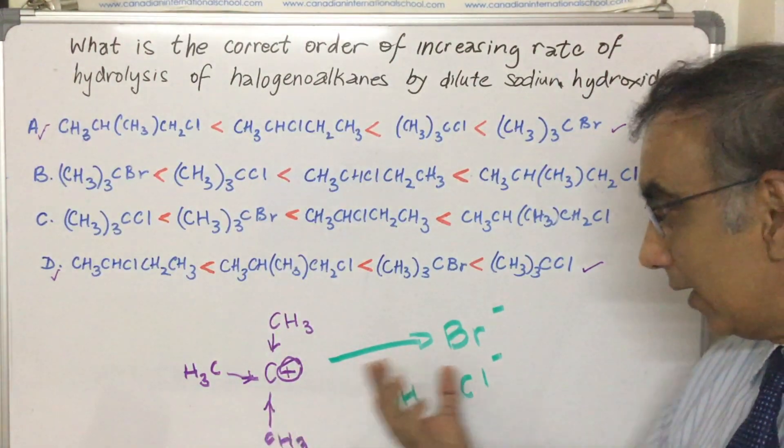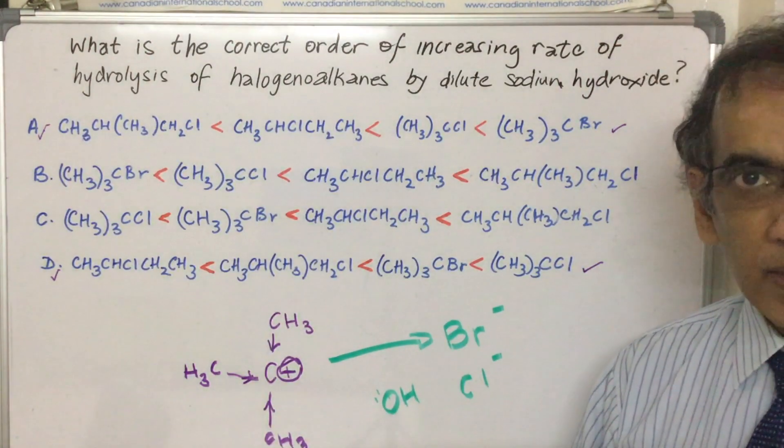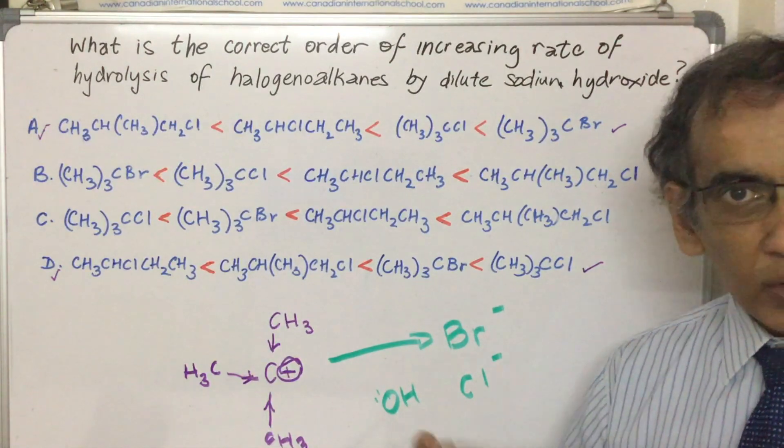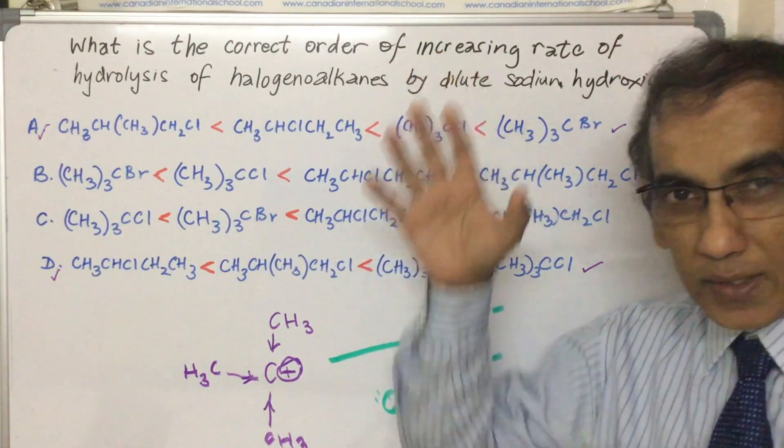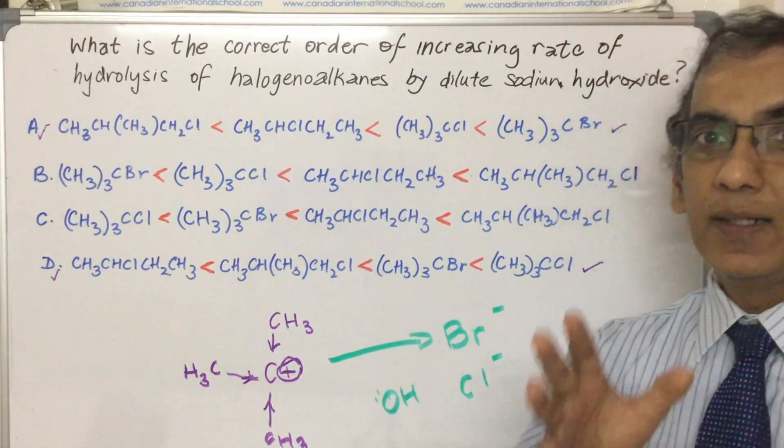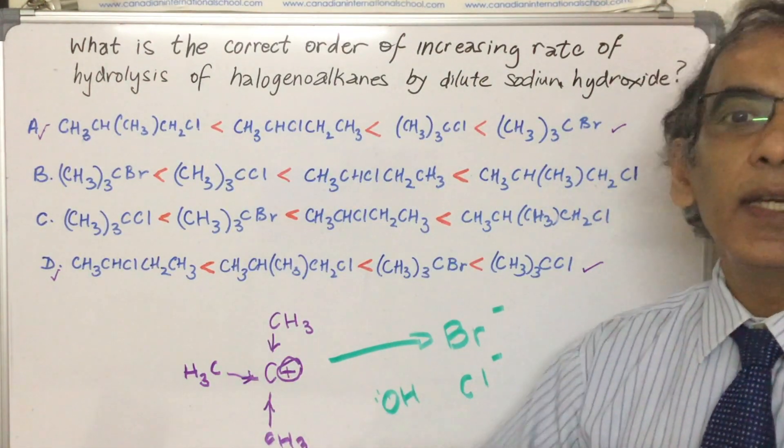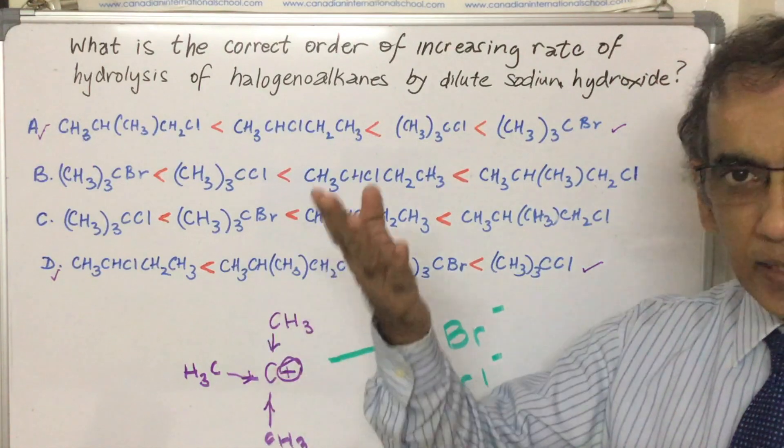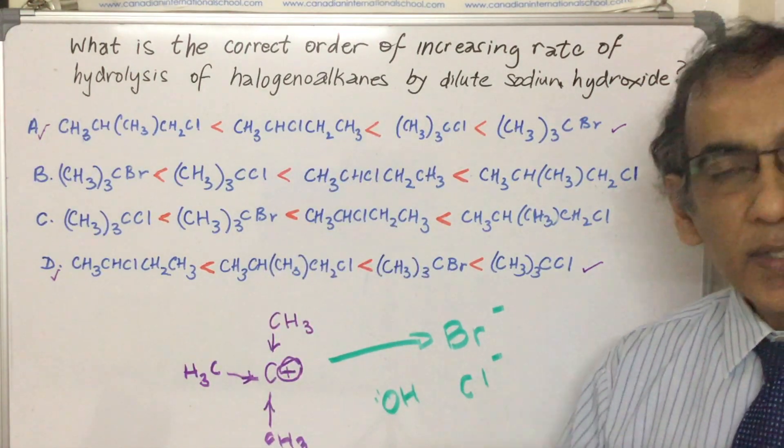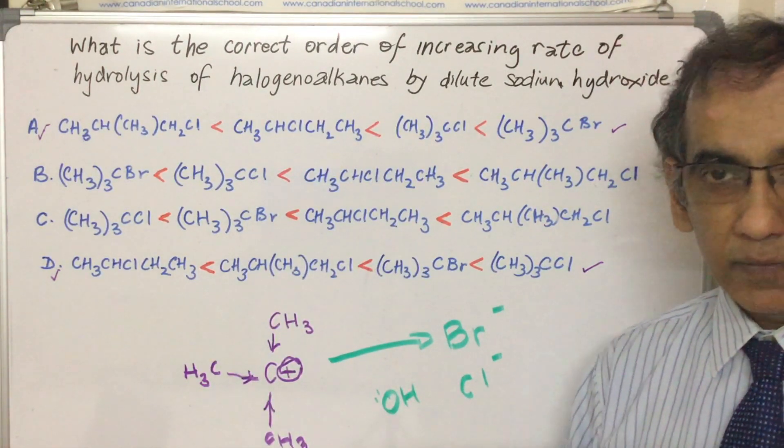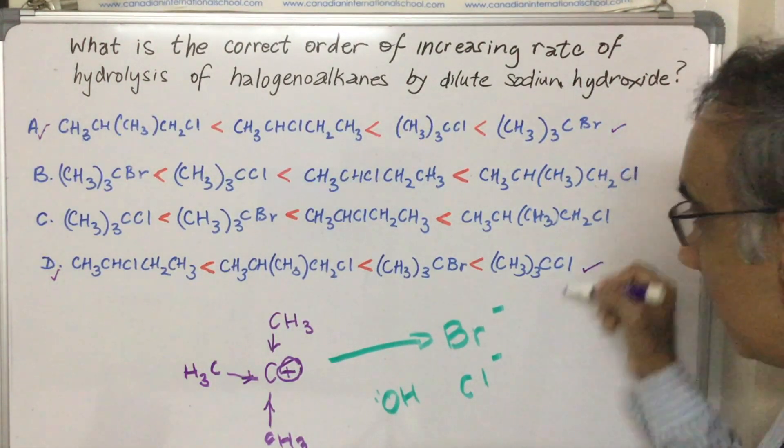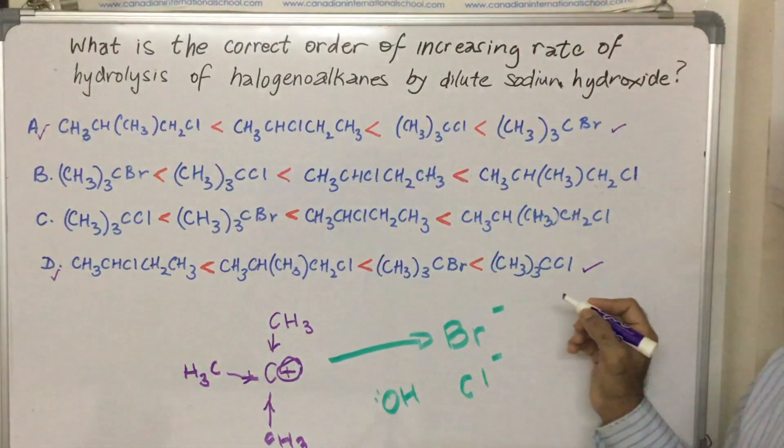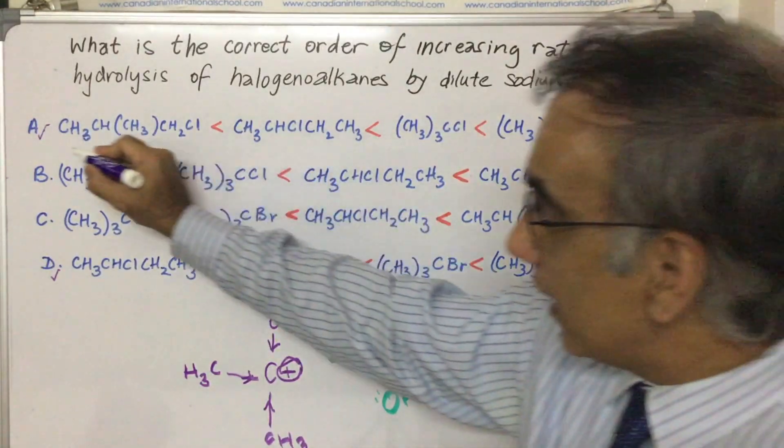A simple way to solve these kinds of questions is to simply remember that as you go down group seven the ease of leaving increases, and the higher up you are in group seven the more difficult it is for the group to leave. Therefore the answer to this question would be that Br leaves in preference to Cl, so that would give you an answer of A.